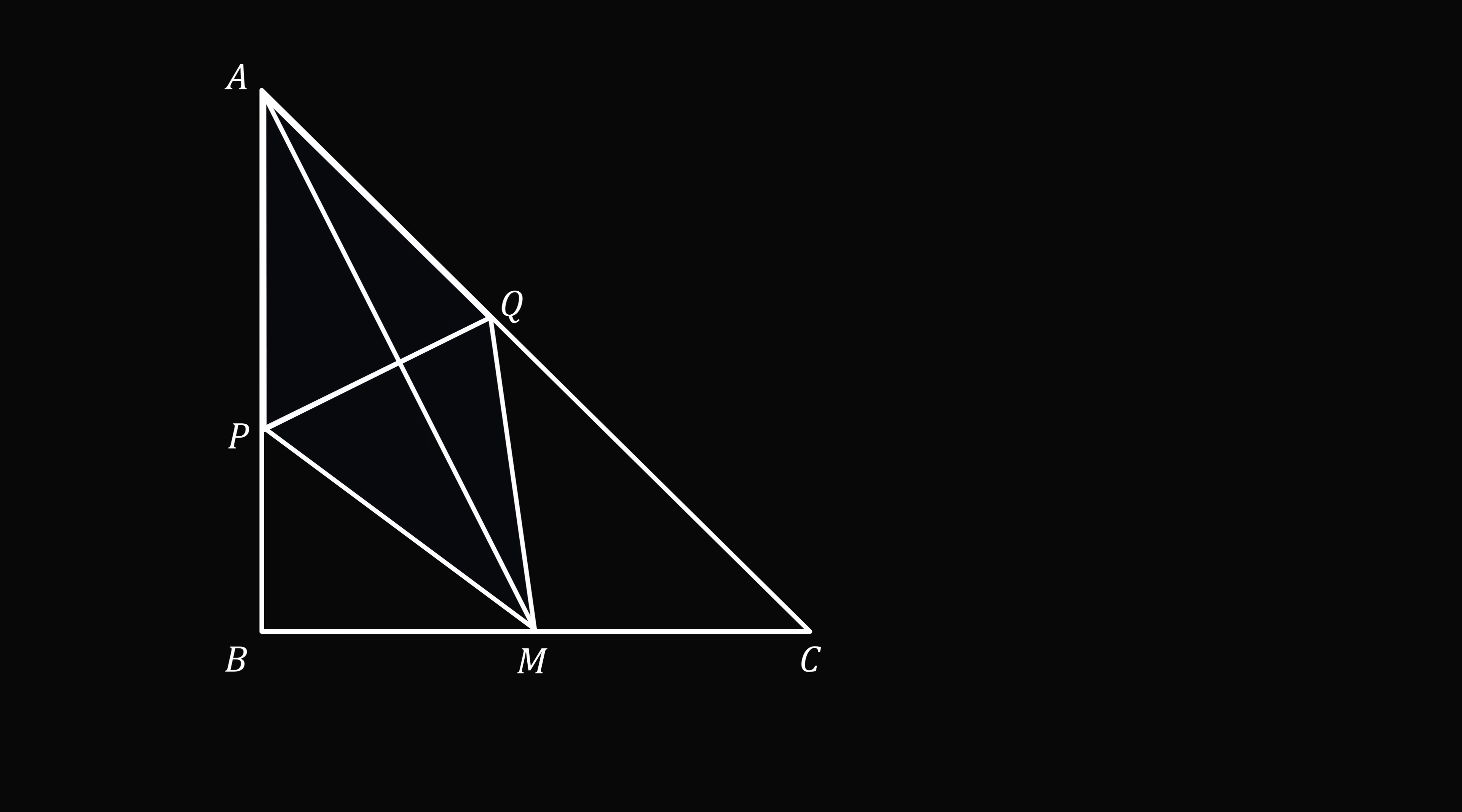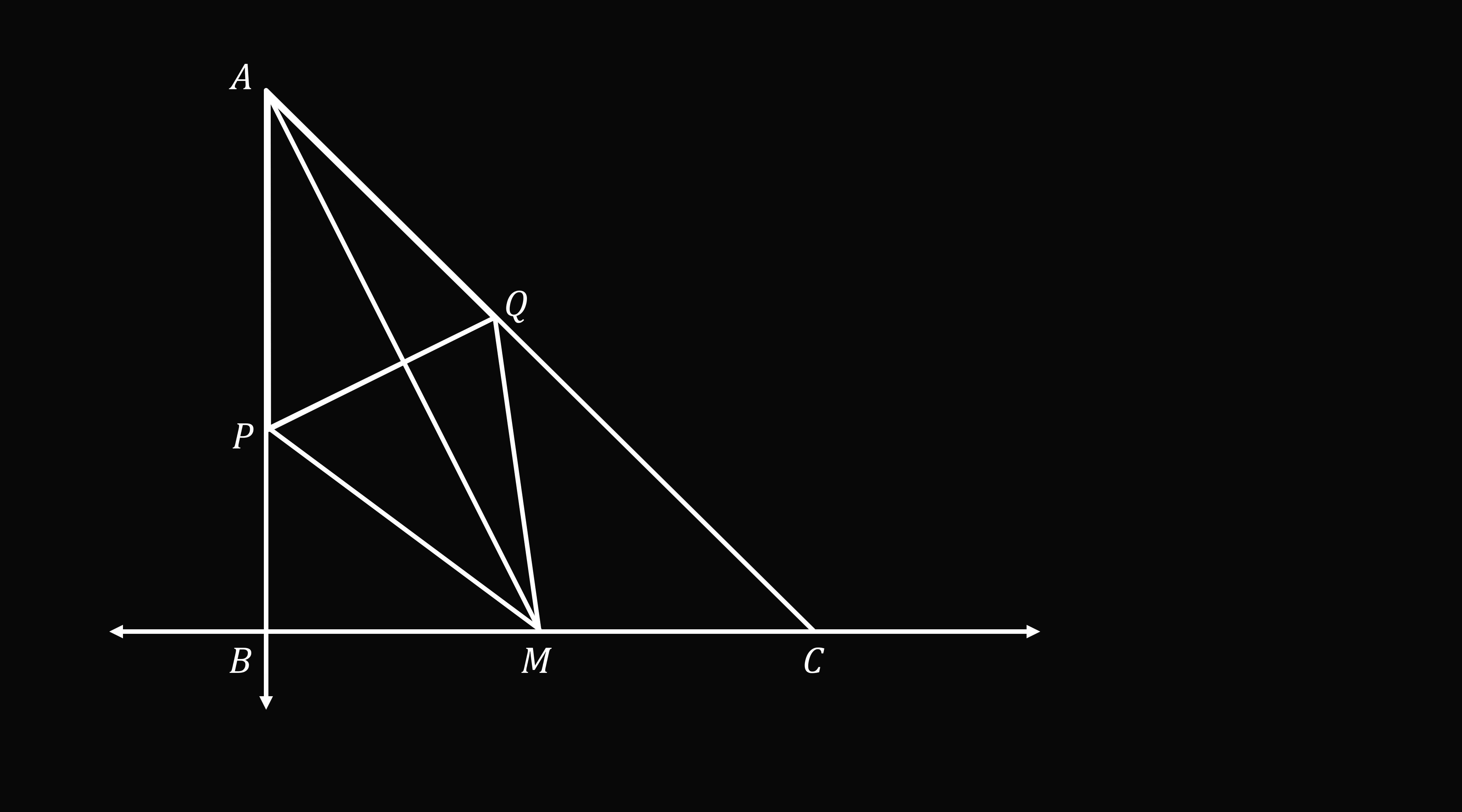So we'll start out with a coordinate system where B is at 0, 0. Since AB is equal to 10, point A is at 0, 10. Since BC is equal to 10, C is going to be at 10, 0. Now, M is the midpoint of BC, so it's at 5, 0.